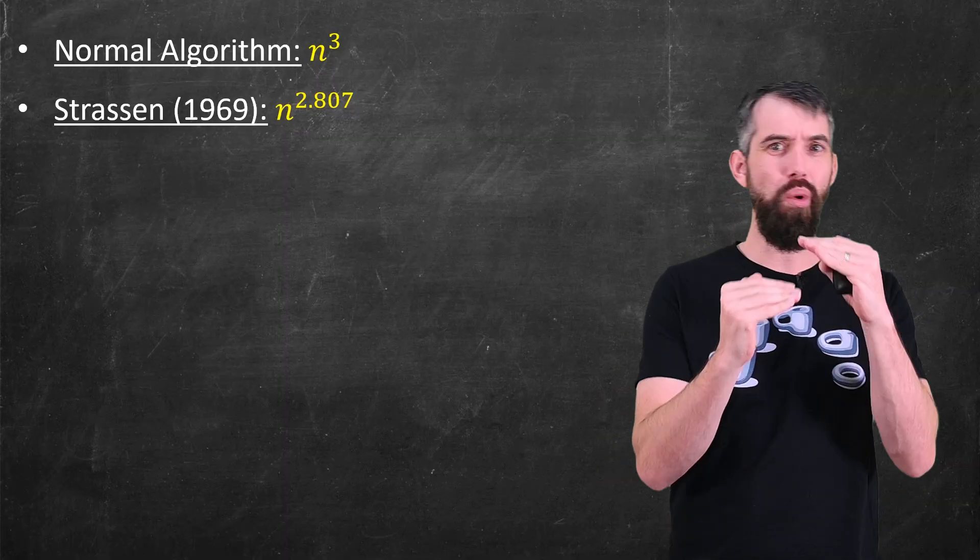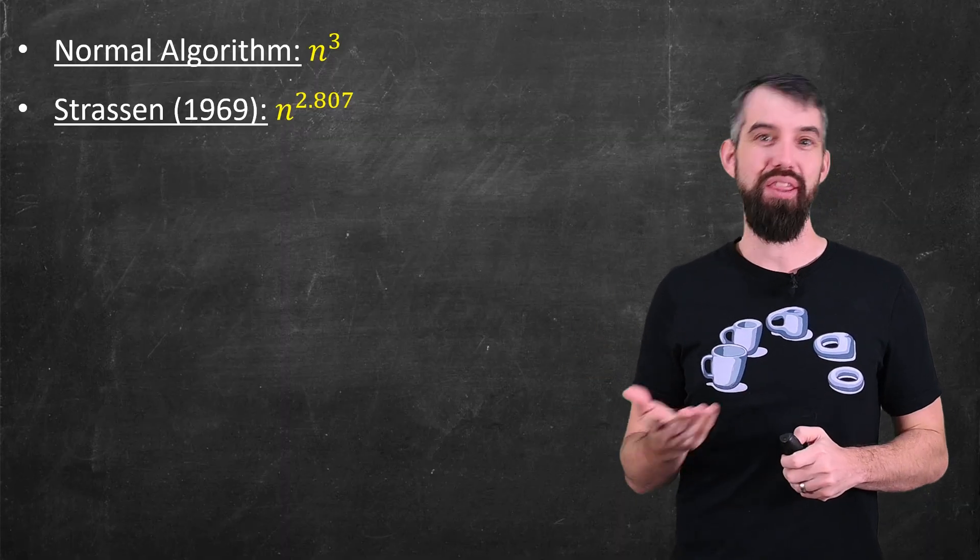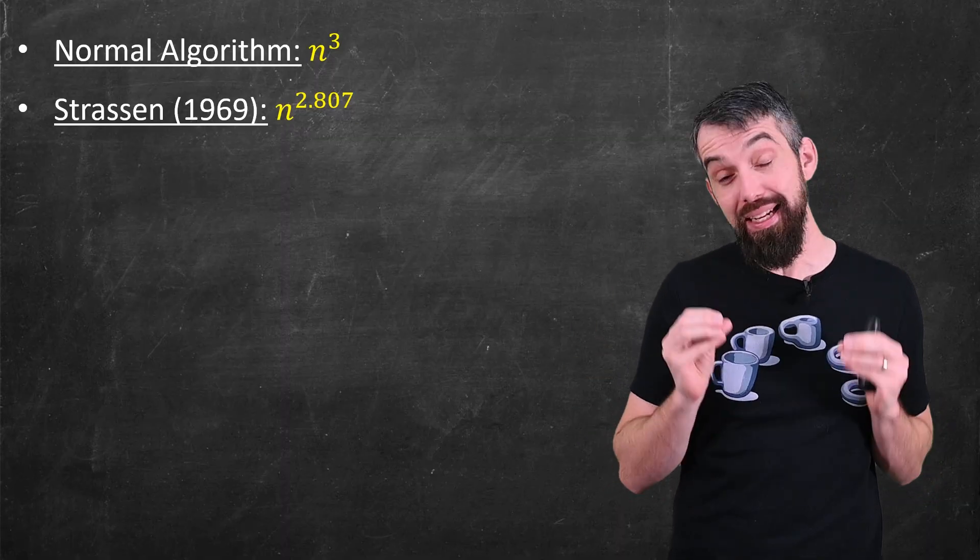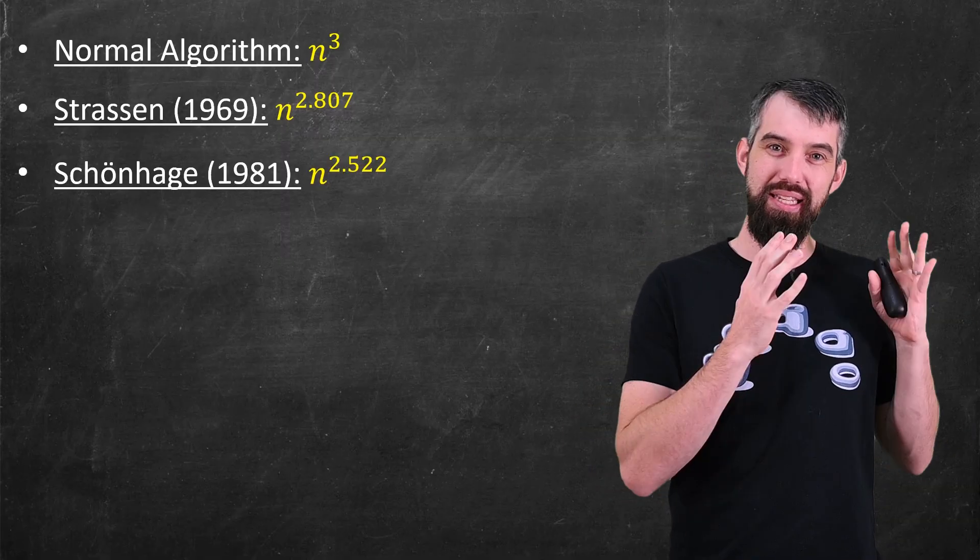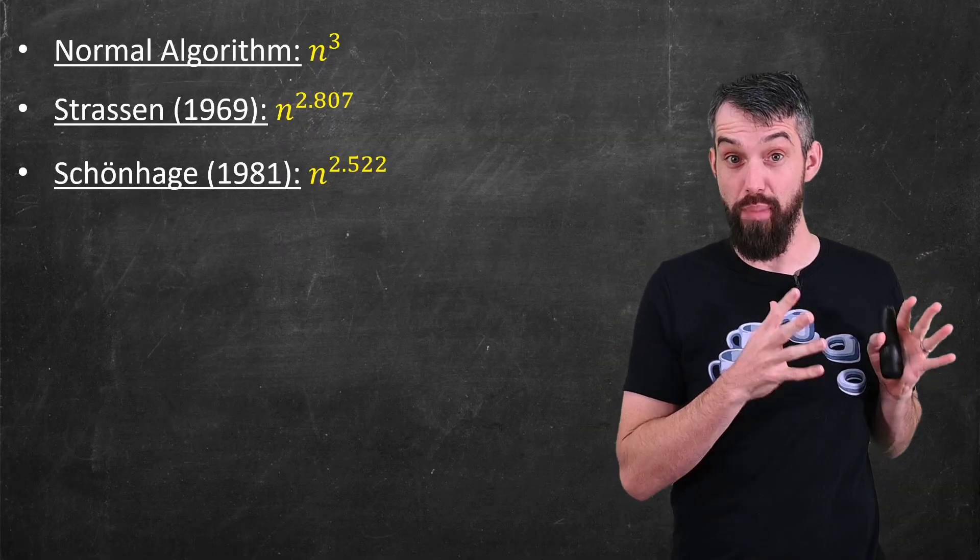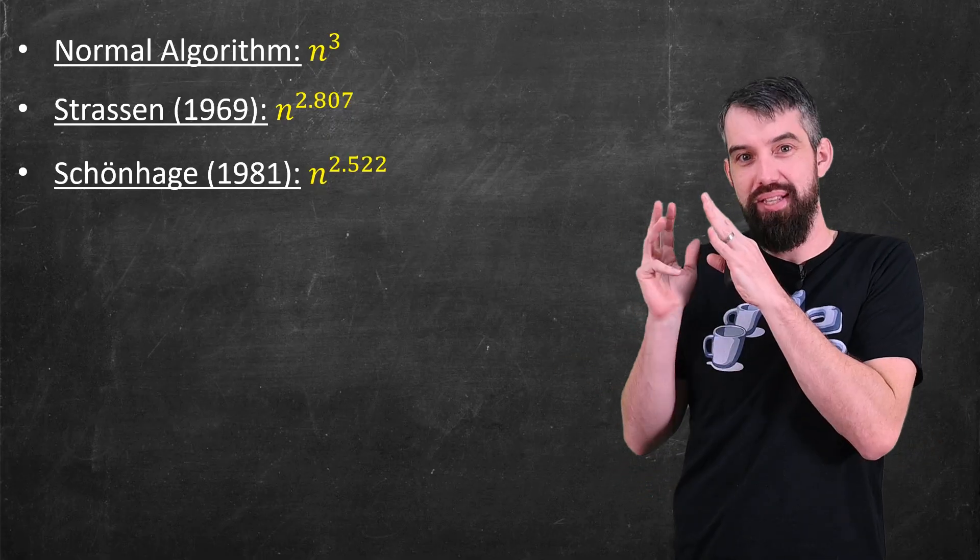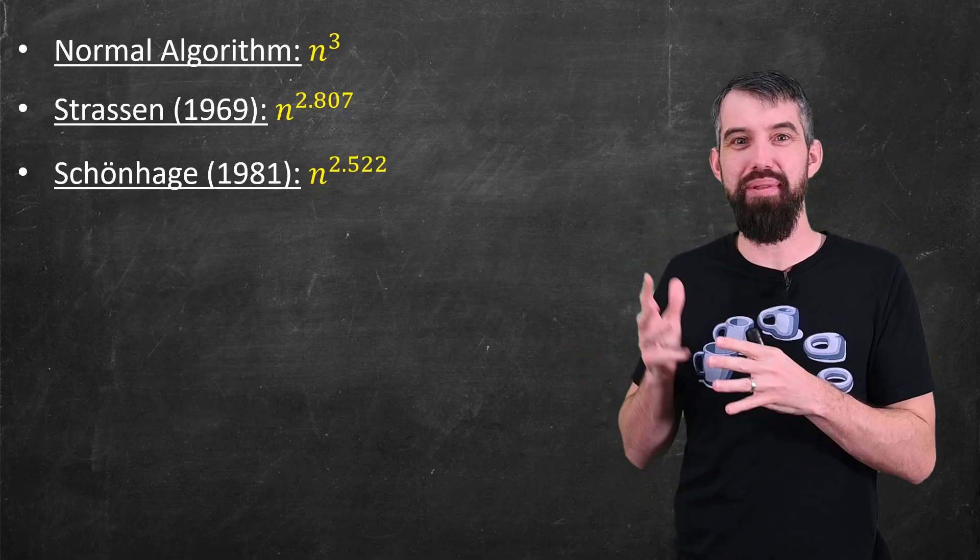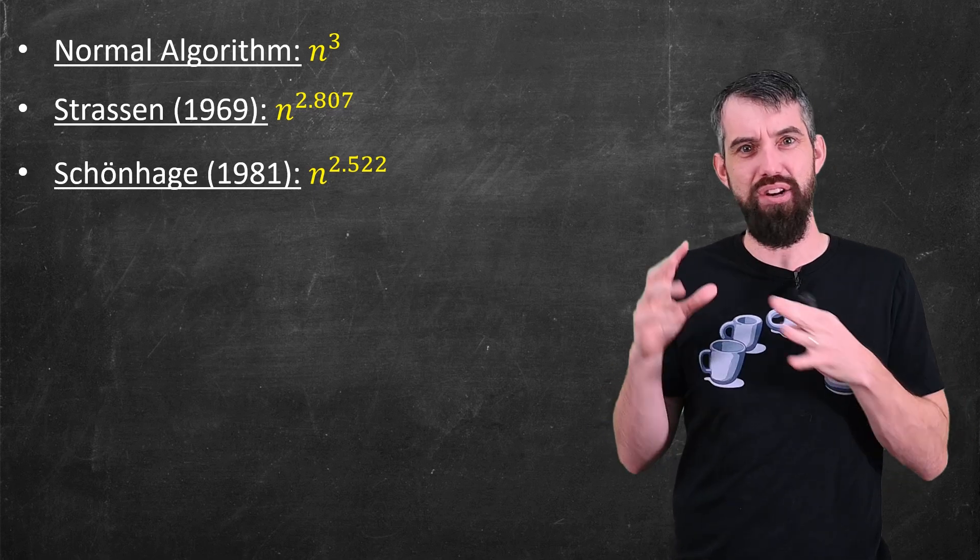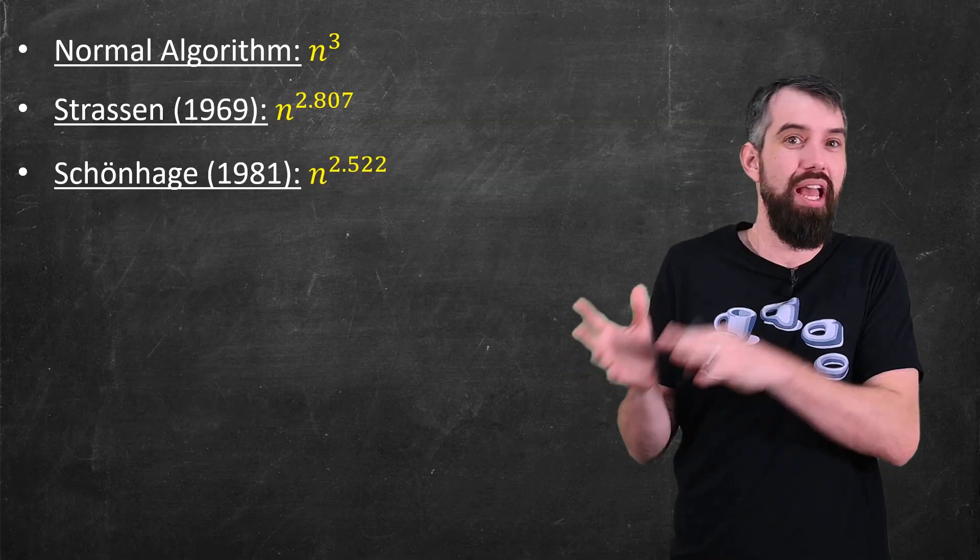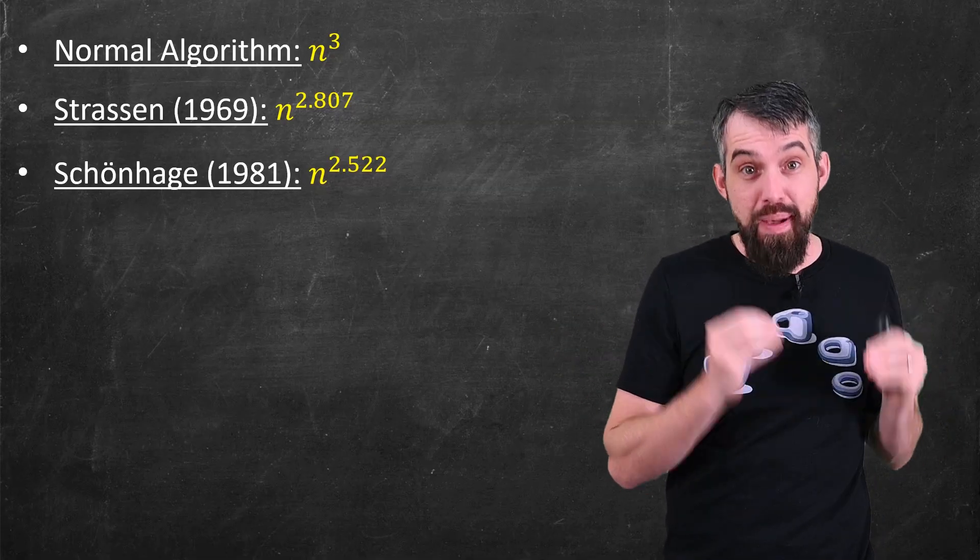This started a whole process of people trying to do better and better and better. The first one came really in 1981 by a new technique called the laser method. Basically, this method translates this multiplication complexity problem into some other problem to do with tensors, and I'm not going to go into it in this video, but I'm going to leave a bunch of links down in the description. And basically, you can use this method and try to answer the problem to do with tensors and cast it back to answer the problem to do with multiplication. That gave a better estimate as well.